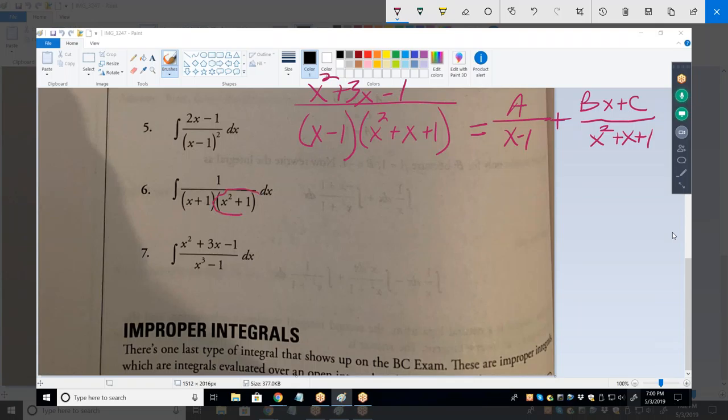It'll be equal to A over X minus 1 plus B over X squared plus X plus 1. And because we have that irreducible quadratic, you have to put an X in the numerator. That's when we have to do it. It's only if we have an irreducible quadratic. We have the same thing right there in number six. And we had to also have a BX plus C.